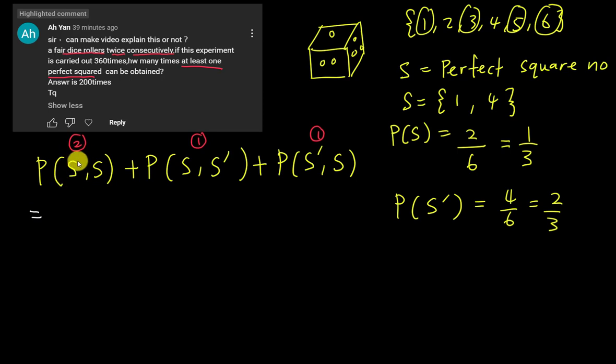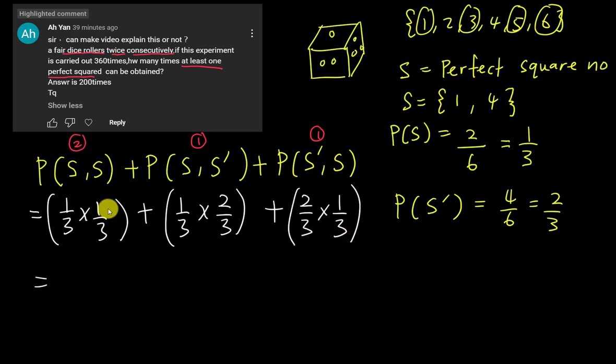Okay, then we come to the answer. If I will get a perfect square number, the probability here already tells me is 1 over 3. So this 1 over 3 multiply 1 over 3. Plus, this one is basically perfect square 1 over 3, not getting perfect square is 2 over 3 times 2 over 3. Then this one, not getting perfect square 2 over 3, getting perfect square 1 over 3. Then I will use a calculator to quickly solve this one. This is 1 over 9. This is 2 over 9. 2 over 9, total should be 5 over 9.